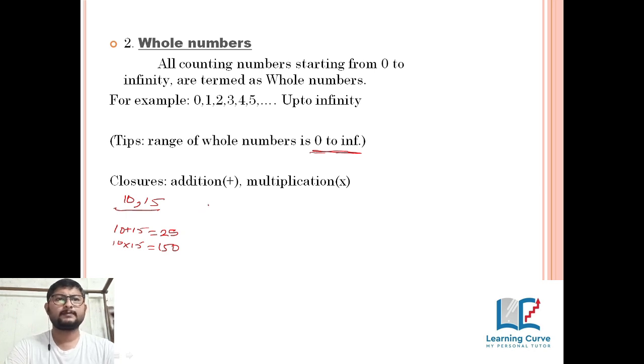Let's see. 10 minus 15 equals minus 5, discarded because this is not a whole number. 15 minus 10 equals 5, yes this is a whole number. But whenever we interchange the digits, the answer is different. But in case of plus or multiplication, if we interchange the digits, the answer remains the same.